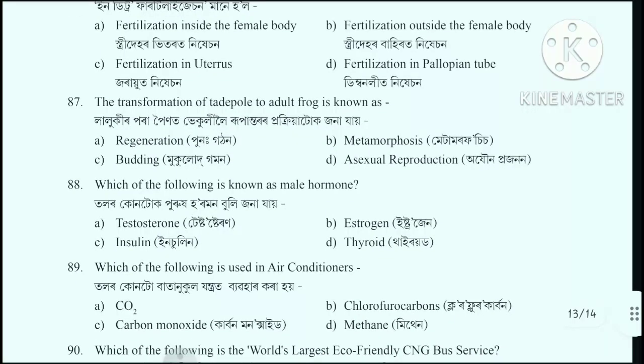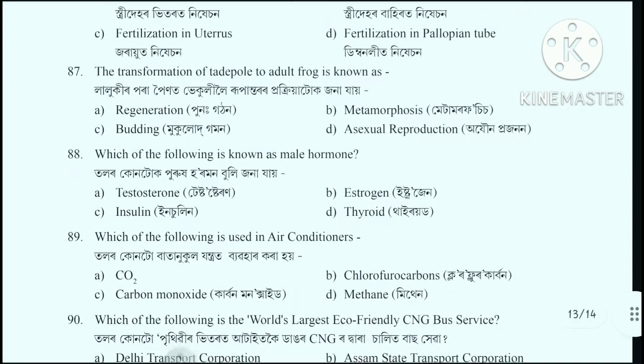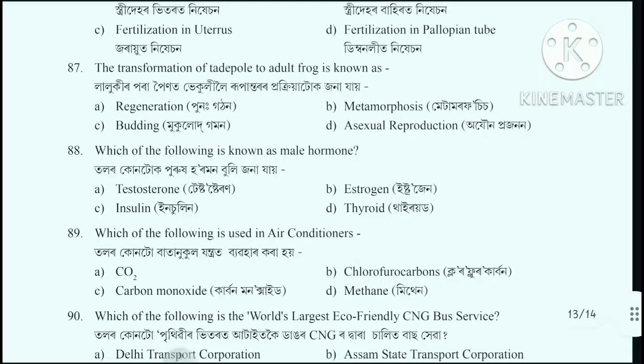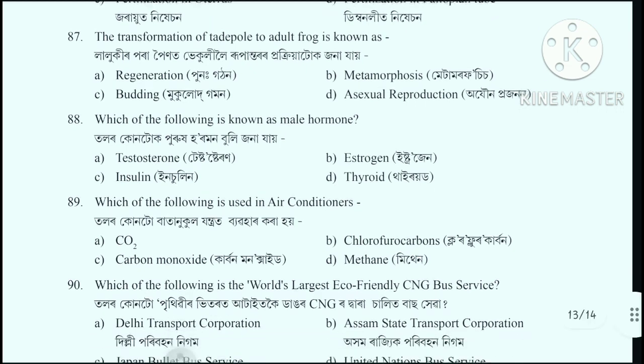Question number 87: The transformation of a tadpole to an adult frog is known as - the process of this transformation. The correct answer is Metamorphosis, option B.